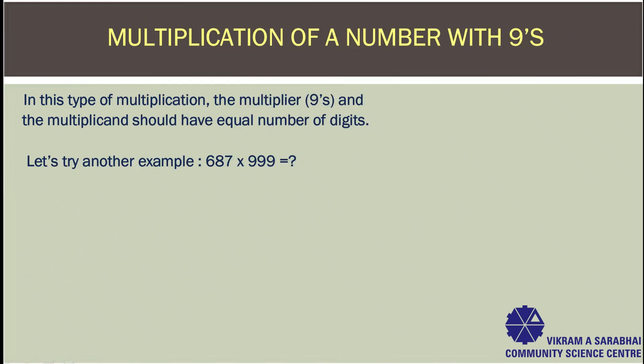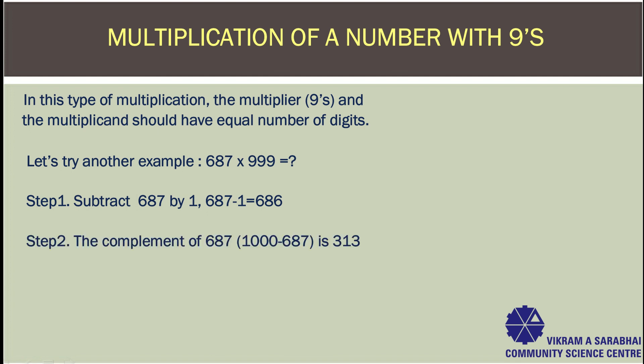Let's try another example. What you will get when you multiply 687 with 999? Step 1: Subtract 687 by 1. That is 687 minus 1. You get 686. Step 2: The complement of 687 is 313. That is 1000 minus 687 equals 313.